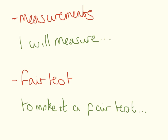Measurements and fair test — I put these together because they are really, really short. Measurements are just asking you if you can identify a dependent variable. You want to make it clear to the examiner that you have answered this point. Something like: 'I will measure [X] — this is my dependent variable.' How you'll make it a fair test: I get loads of students saying 'I'll make it a fair test by repeating it three times.' This isn't what the examiner is looking for.